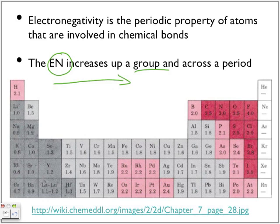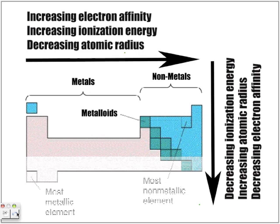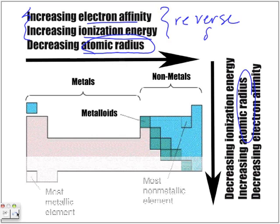Let's look at what we talked about in the previous lesson about periodic trends and compare it. We've seen this periodic table before. To know the direction in which electronegativity increases, if we know what the atomic radius is and the direction it's moving, remember that electron affinity and ionization energy are always the reverse of whatever the atomic size is.